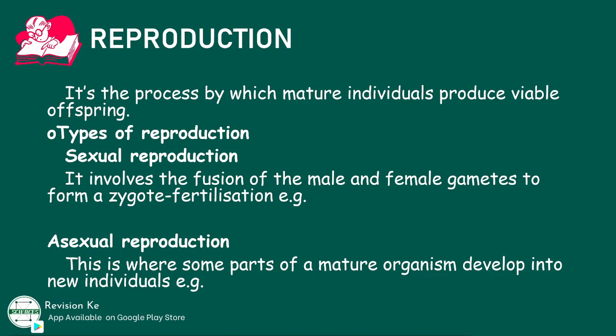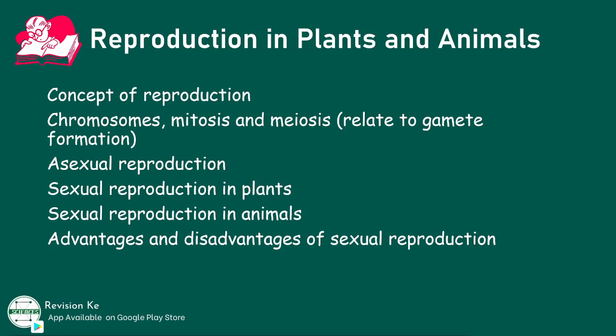With that said, let's look at the other objectives under this topic. You should be able to describe the location and appearance of chromosomes and chromosome movements during mitosis and meiosis. You should also be able to differentiate between mitosis and meiosis, stating their significance in reproduction.